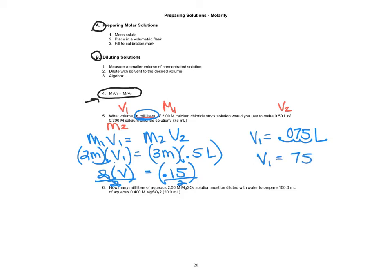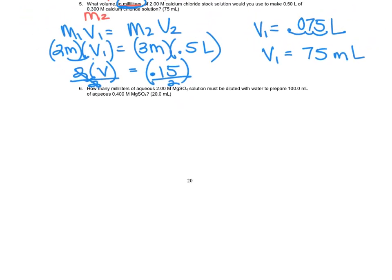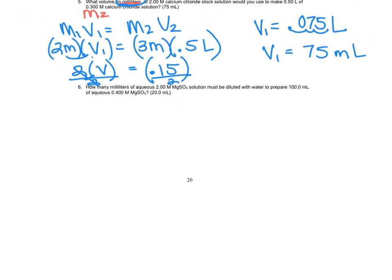All right, looking at number six. Let's move down here. How many milliliters - so again that's a question for volume - of two molar magnesium sulfate, there's your M1, that's a molarity. That solution must be diluted with water to prepare this volume of this molarity. So again, we have all four variables.